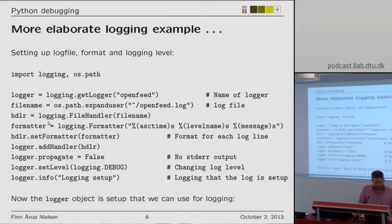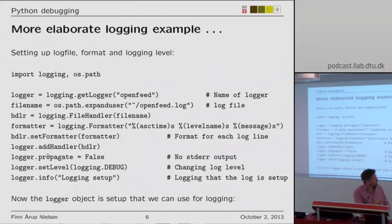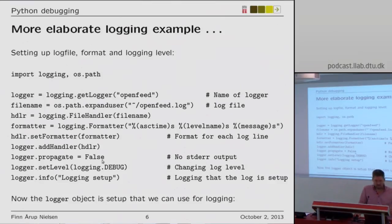We set up the handler for that file name, then make changes in the formatting — the time of the log message, the level, and the message itself. We get a formatter object and set the formatter in the handler, put the handler to the logger, and then set propagate to False so it doesn't output to standard error or standard output.